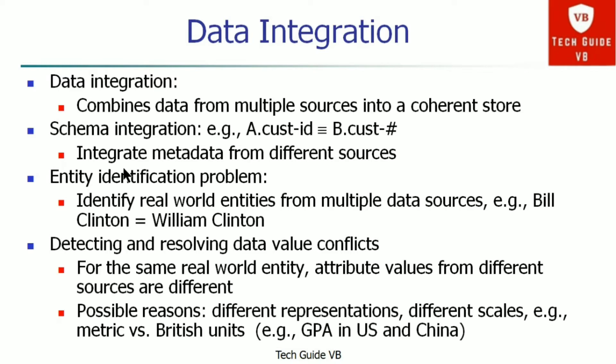For the same real-world entity, attribute values from different sources can be different. Possible reasons include different representations or different scales — for example, metric versus British units — or different grading systems, such as GPA in the US versus China. These are some of the possible reasons for conflicts.